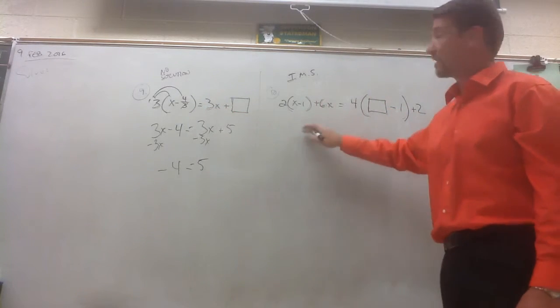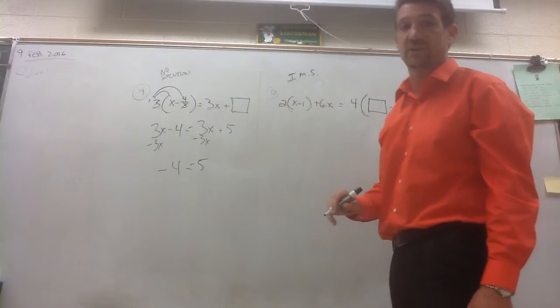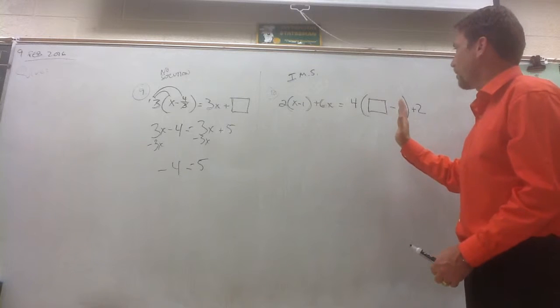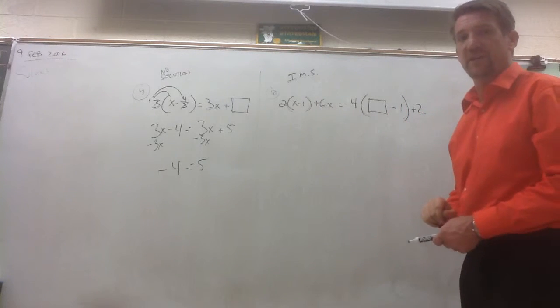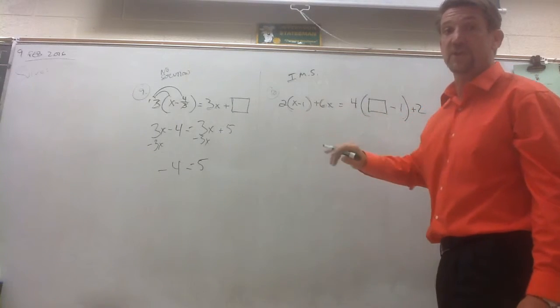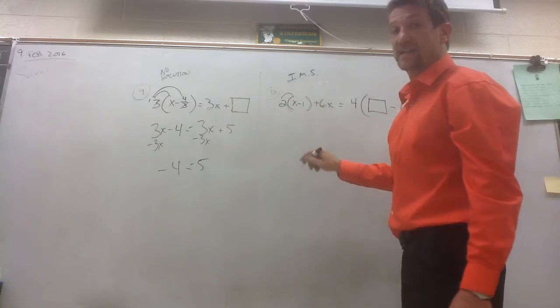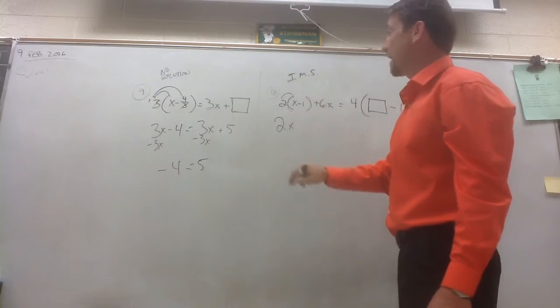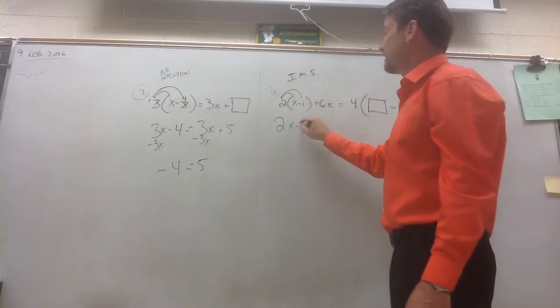Okay, so there's number 9 on your homework. Take a look at number 10. You had to come up with an equation that had infinitely many solutions. So we need to make the right side of this equation have the same value as the left side of the equation. Let's start by simplifying the left side of the equation here. We'll first use some distributive property.